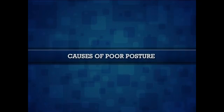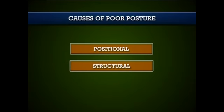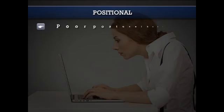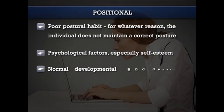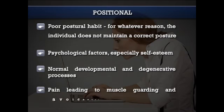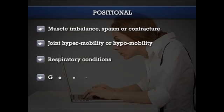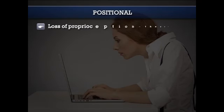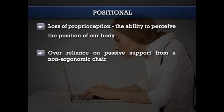Next come the causes of poor posture. The causes of faulty posture can be divided into two categories: positional and structural. Positional causes include poor posture habits, psychological factors especially self-esteem, normal developmental and degenerative processes, pain leading to muscle guarding and avoidance posture, muscle imbalance, spasm or contracture, joint hypermobility or hypomobility, respiratory conditions, general weakness, excess weight, loss of proprioception — the ability to perceive the position of our body — and over-reliance on passive support from a non-ergonomic chair.